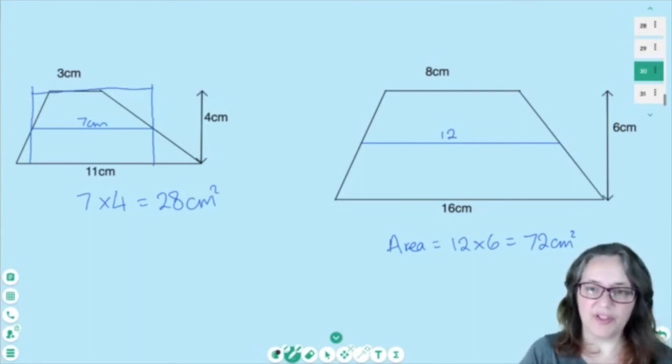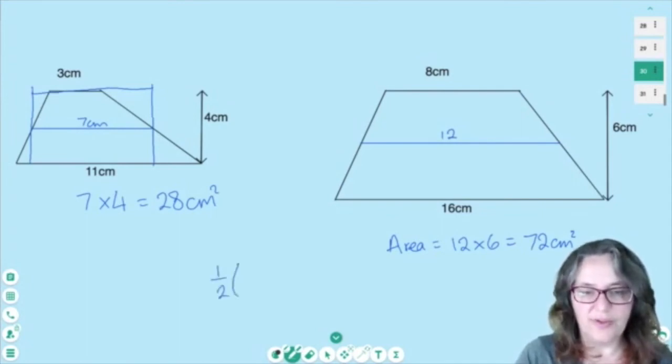That gives us the average length. Now the formula for area of trapezium is actually half (a + b) times h. That's exactly what I've done.